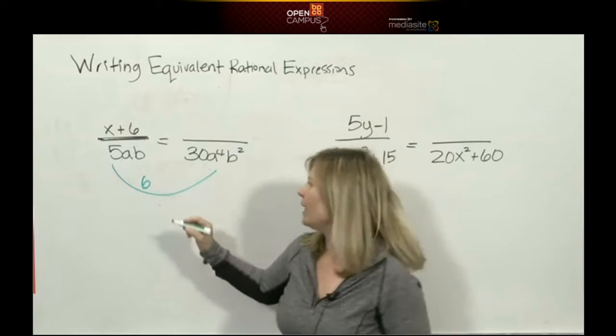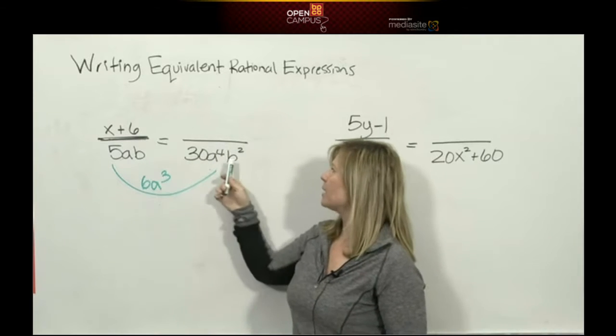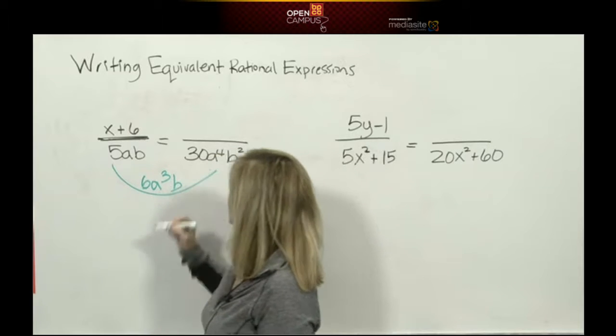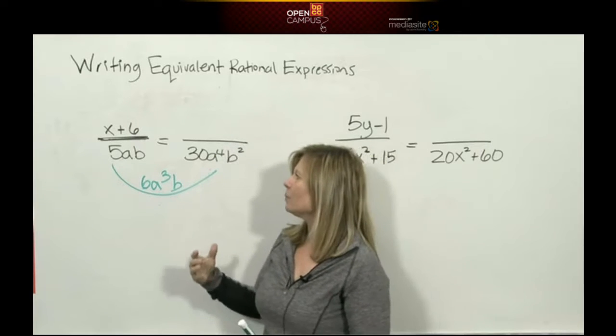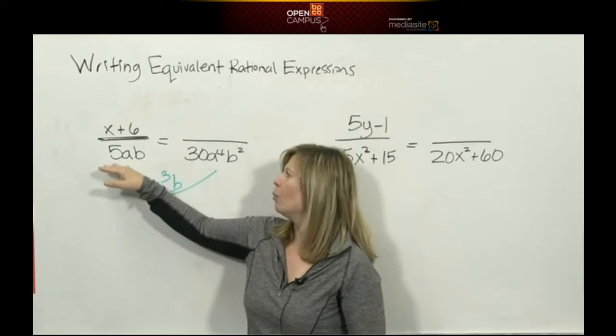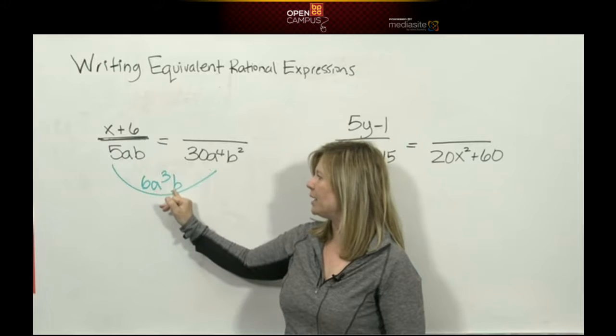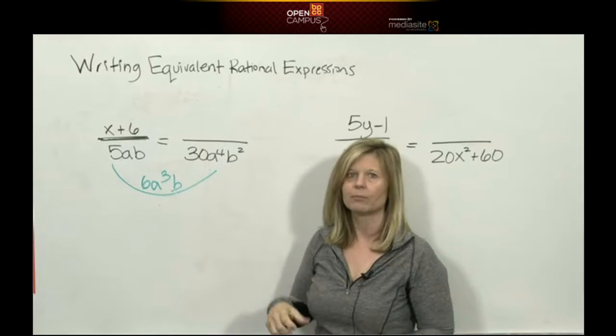How does an a become an a⁴? Well, that's easy - you multiply by a³. How did the b become a b²? You multiplied by b. So if this was the old denominator, 5ab, and we multiply it by 6a³b, we would get our new denominator.